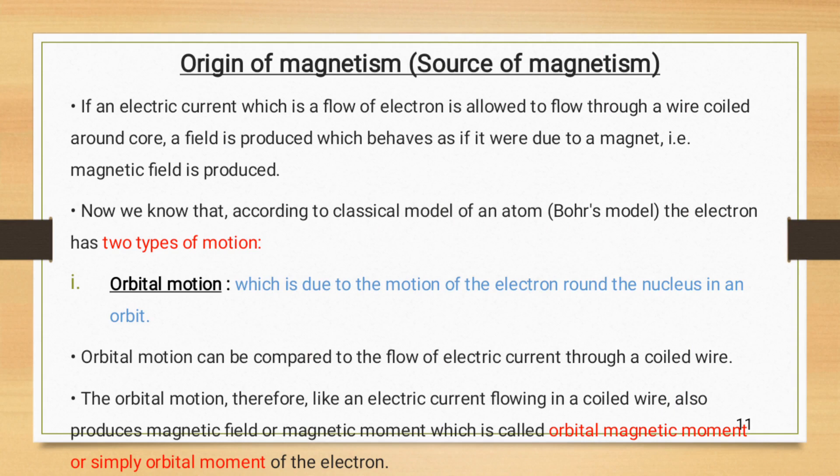Origin of magnetism: Magnetism is the source of magnetism if an electric current which is flow of electron is allowed to flow through a wire coiled around a core. A field is produced which behaves as if it were due to the magnet, for example magnetic field is produced.